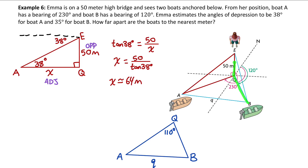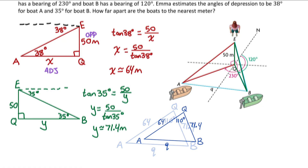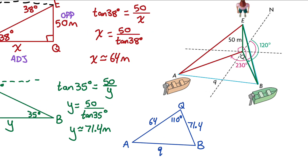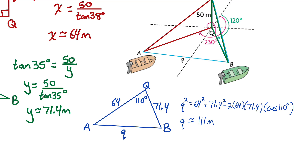Following the same process for the boat B right triangle gives side y. Now with two known sides x and y and the contained angle of 110 degrees in the oblique blue triangle, I use cosine law: q² = x² + y² − 2xy·cos(110°). Evaluating and square-rooting gives q ≈ 111 meters, meaning the boats are about 111 meters apart.